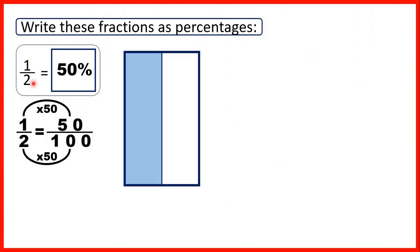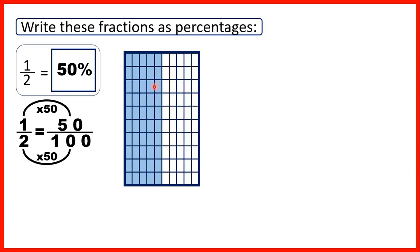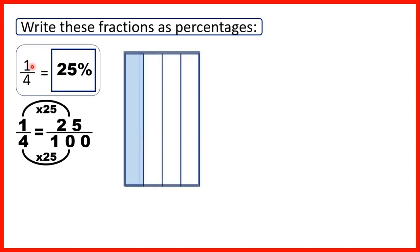First, we had 1 half, so 1 part out of 2. And we can see that shaded here on our fraction bar. But a percentage is a fraction with a denominator of 100. So if we split our fraction bar into 100ths, you can see that we have 50 hundredths, so that's why 1 half is 50%.